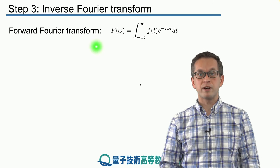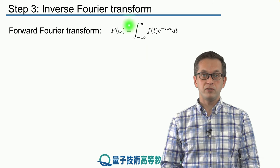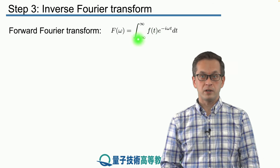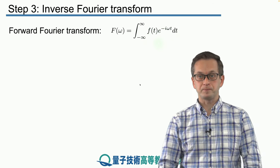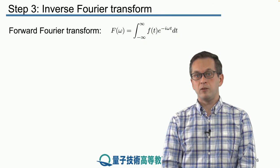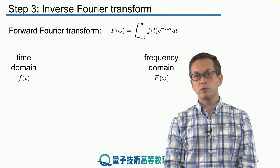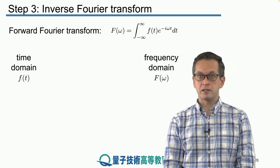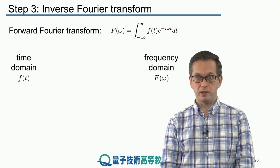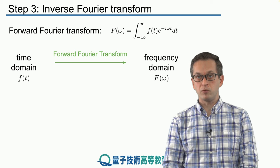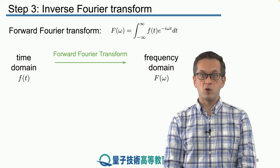Just to remind you, the forward Fourier transform is given as follows: it's the integral from minus infinity to infinity of some time signal f(t) times the following exponential. What really happens is this forward Fourier transform takes our signal in the time domain and transforms it into a signal in the frequency domain. We go one way, and the question we are going to answer is: how do we go backwards?